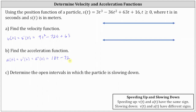Part C: determine the open intervals in which the particle is slowing down. The particle is slowing down when the velocity and acceleration have different signs. The first step is to determine where the velocity and acceleration are equal to zero, and then determine where each function is positive and negative. Setting v of t equal to zero gives us nine t squared minus 72 t plus 63 equals zero.